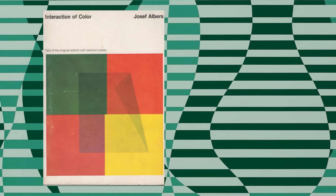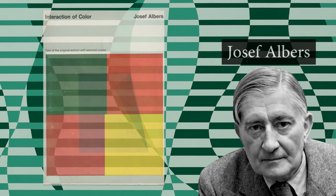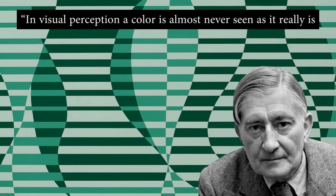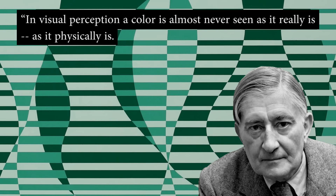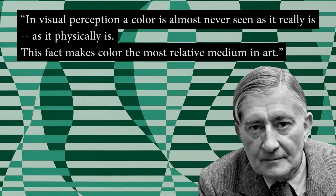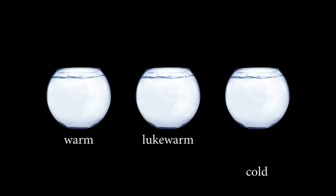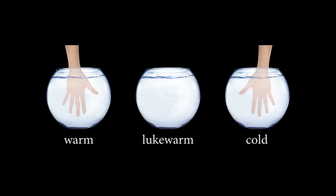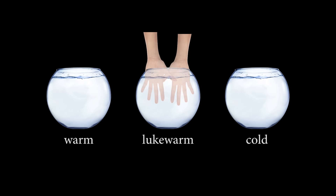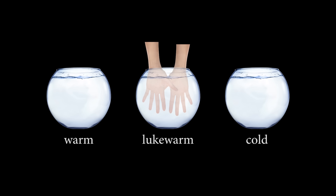In the book Interaction of Color, the artist Joseph Albers discusses the way in which color is relative. In visual perception, a color is almost never seen as it really is — as it physically is. This fact makes color the most relative medium in art. Here's an experiment he describes: there are three pots of water in front of you containing warm, lukewarm, and cold water. You dip your hands into each outer container — left hand in the leftmost pot and right hand in the rightmost. You perceive two different temperatures: warm on the left and cold on the right. But then you dip both hands in the middle container. You perceive two different temperatures again but in reverse — your left hand feels cold and your right hand feels warm. But in reality, the water is lukewarm. The context of our prior experience altered our perception.